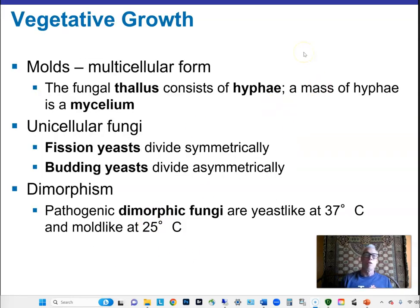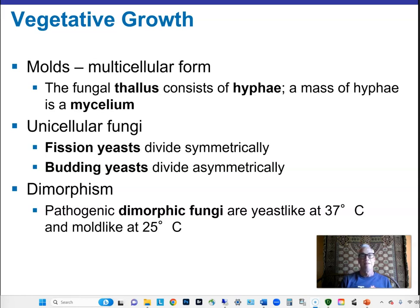When we talk about molds, we're talking about multicellular forms of fungi. The cells grow in thread-like structures called hyphae, and a mass of hyphae is called a mycelium. The overall growing tissue is called the thallus. Many fungi can also grow in unicellular form, and we call those yeasts. Yeasts commonly divide by budding — the bud forms off the side of the cell, grows, and breaks off. There are also fission yeasts.